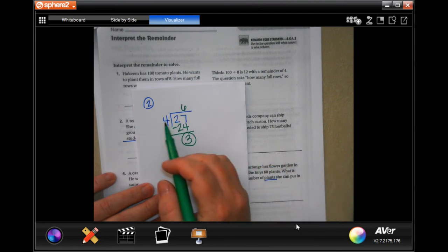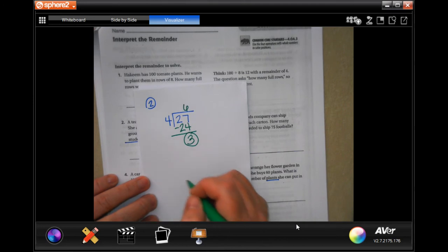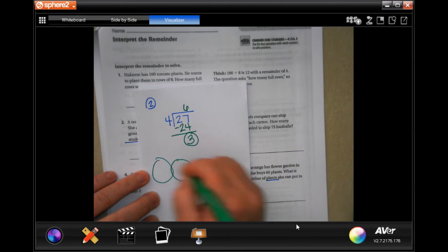There will be 6 groups of 4, but then 3 students will not be in a group. If you need to draw that picture, draw the picture. It's not going to hurt anything. Okay, you have 4 groups.